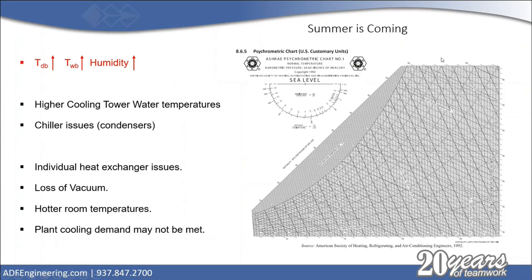Summer is coming — that's the theme of this presentation. With summer, you get higher dry bulb temperatures, higher wet bulb temperatures, and obviously higher humidity. The hotter your air gets, the more water it's able to hold. And so what you get is higher cooling tower water temperatures, as you all may have experienced. Cooling towers are a function of wet bulb temperatures, so as the wet bulb temperature goes up, your cooling tower supply water temperature goes up, and you might experience chiller issues.